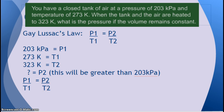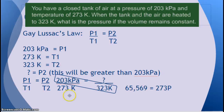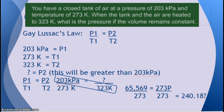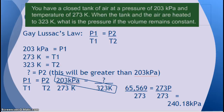We have our formula — plug in our numbers and cross-multiply. I got 65,569 equals 273 times P2. Divide both sides by 273 and I get 240.8. Does that make sense? I started with 203 and ended with 240 — yes, it went up. The unit is kilopascals because it was a pressure measurement.